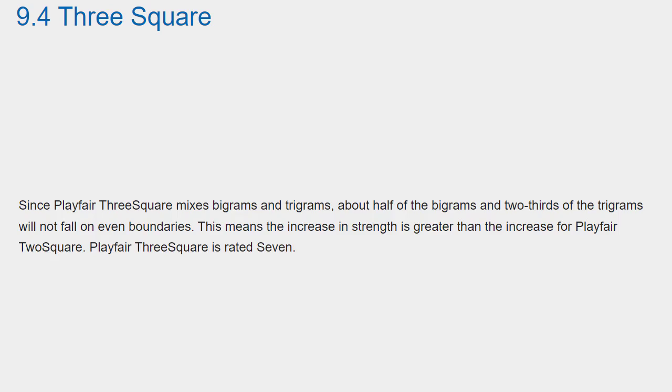Since Playfair Three Square mixes bigrams and trigrams, about half of the bigrams and two-thirds of the trigrams will not fall on even boundaries. This means the increase in strength is greater than the increase for Playfair Two Square. Playfair Three Square is rated 7.